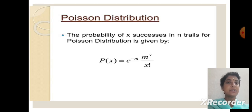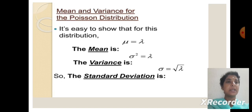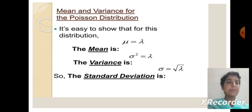The definition of Poisson distribution: the probability of x occurrences in n trials for Poisson distribution is given by P of x equal to e power minus m times m power x divided by x factorial. Mean and variance of Poisson distribution are the same; mean is lambda and variance is also lambda. The standard deviation is root lambda.